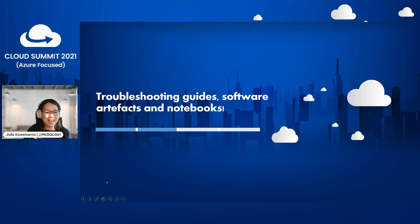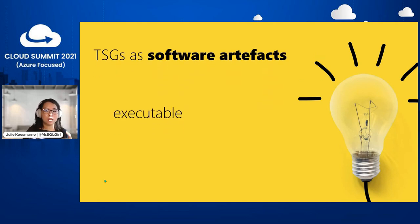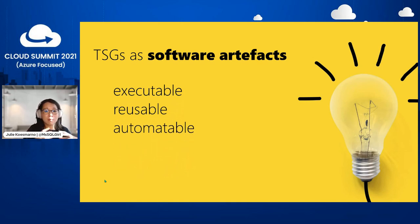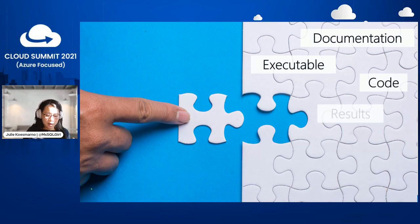What if we take a step forward and look at troubleshooting guides in a different light — from a software artifacts or software engineering point of view? If we can make TSG content into software artifacts, that means we can make them executable, reusable, and automatable. If they are software artifacts, we can also potentially do auto-build and testing. That's the world Shafiq is in today, and I'm excited to have him talk more about how the TSG engineering loop works.